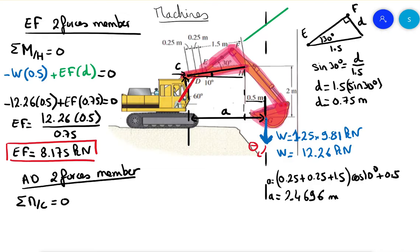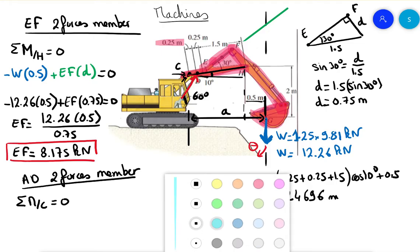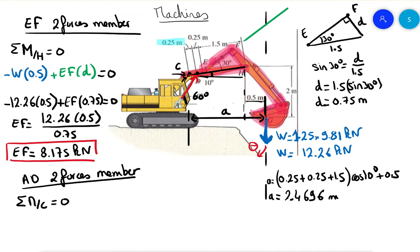The weight rotates in the negative direction about C, so force AD must rotate in the positive direction to balance it. There is an angle of 60 degrees for AD and an angle of 10 degrees for the arm geometry, and the relevant distance between the two points is 0.25 m. We draw the small triangle with these angles to resolve the components.